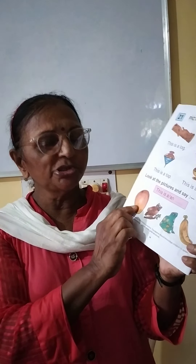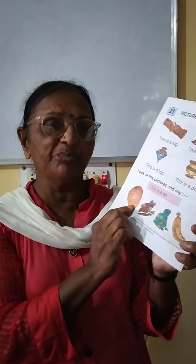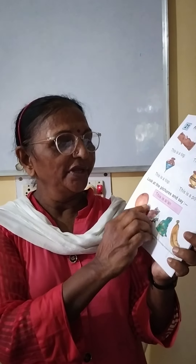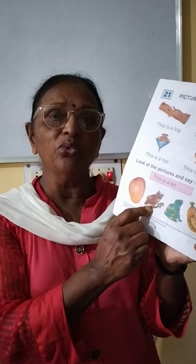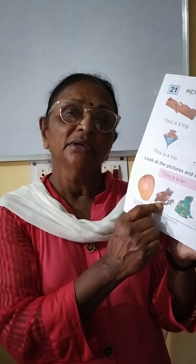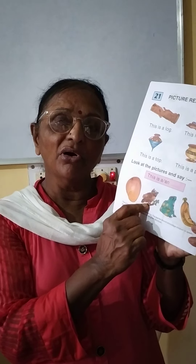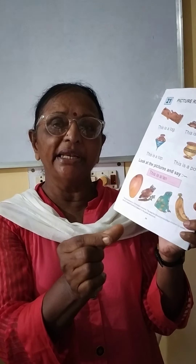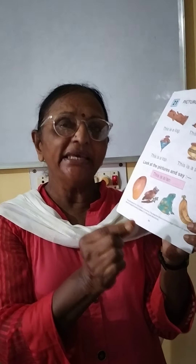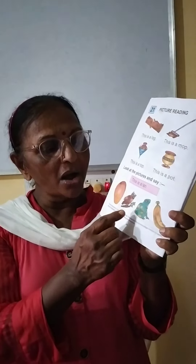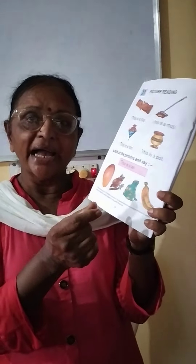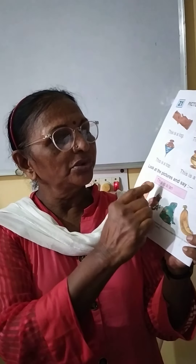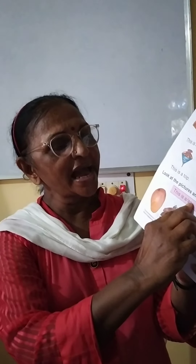This is a potato. You don't say 'an potato' — you say 'a potato.' The next picture is of an owl. We use 'an' for words beginning with the vowels a, e, i, o, u — words like 'apple,' 'egg,' 'owl,' 'umbrella,' 'ice cream.' So this is an owl.